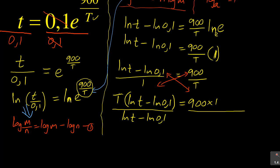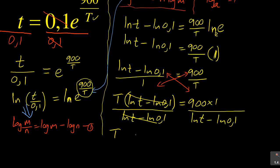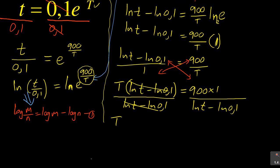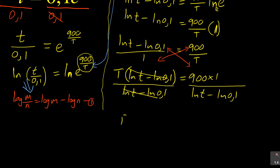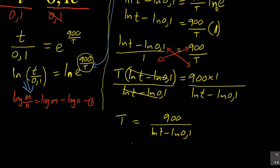Remember, don't lose focus — we are interested in making t the subject of the formula. Don't be tempted to expand and open that bracket; you have already gotten your answer. Simply divide both sides by what you don't want, which is (ln T minus ln 0.1). That cancels on the left, and therefore your T is equal to 900 all over ln T minus ln 0.1. That is how you make t the subject of the formula — that was one way of doing it.